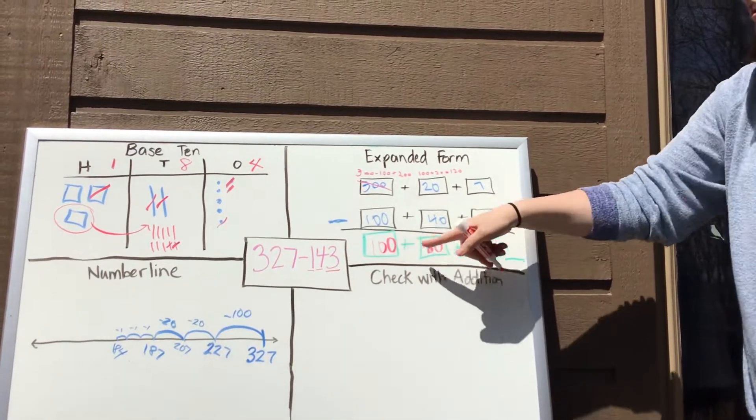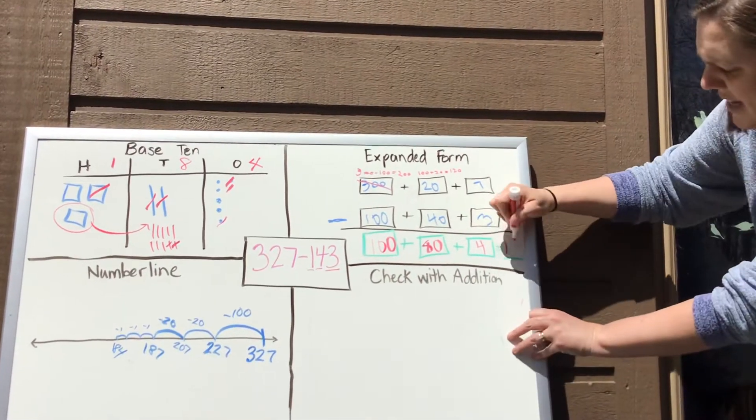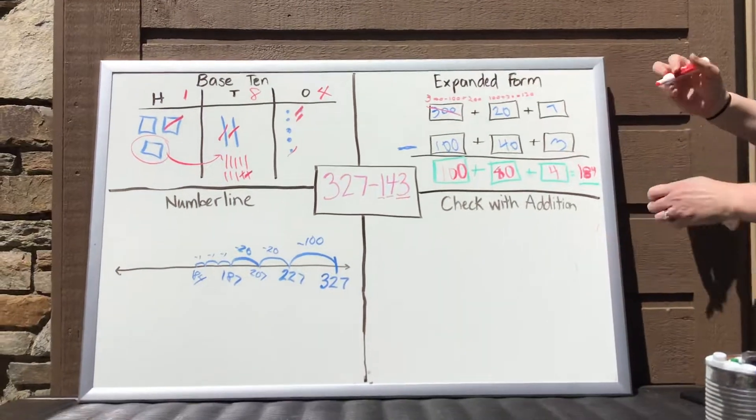And then to get my final answer, I'm just going to look across. 100 plus 80 plus 4. And that gets me to that same answer of 184.